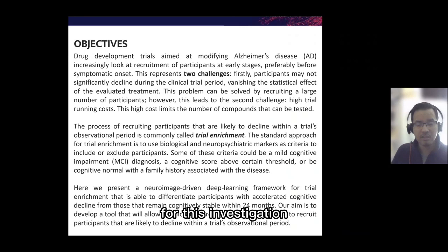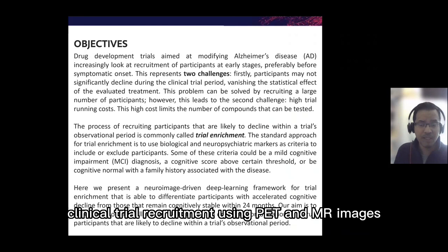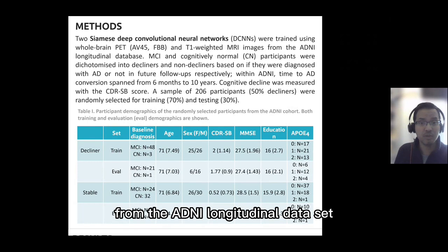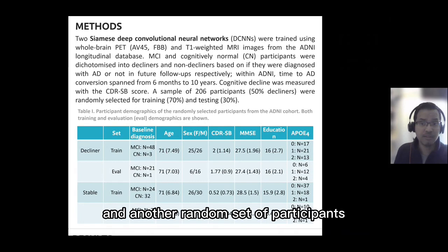For this investigation, we are presenting a deep learning framework where we developed a tool to aid clinical trial recruitment using PET and MR images. The framework is based on Siamese deep convolutional neural networks, and we trained it with PET and MR images from the ADNI longitudinal dataset. We selected two random samples of participants who stayed stable for a long period of time, and another random set of participants who would have a future diagnosis of AD.